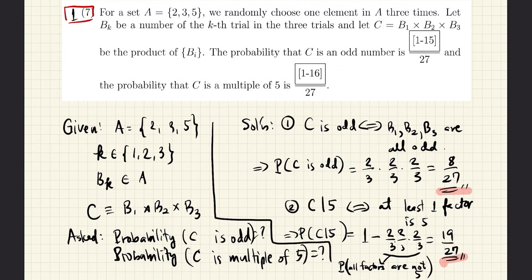And here, we just write it this way: that B sub K must be picked from the set A. Here K is just the number of trials. So B sub 1 is the first trial, B sub 2 is the second trial, and B sub 3 is the number we get from the third trial.